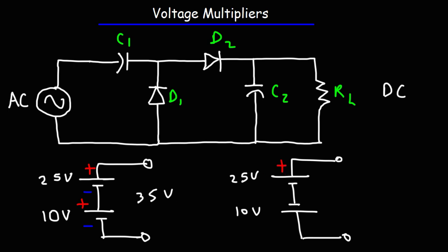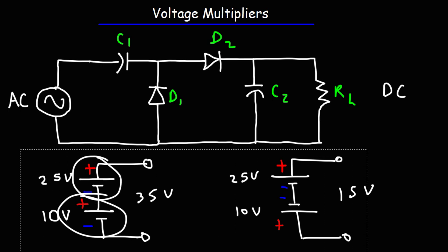Now if we switch the polarity of the 10-volt battery, the two negative terminals are facing each other, so these batteries oppose each other. The stronger one wins out — the total voltage will be 15 volts, which is 25 minus 10. So whenever you have two elements with a voltage across them, if the positive side of one element is attached to the negative side of the other, the voltages add up. And that's going to happen in this circuit.